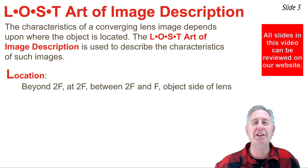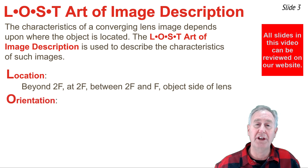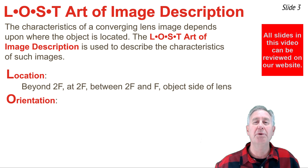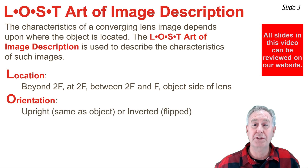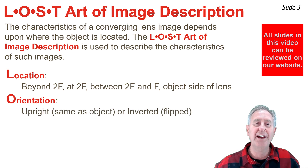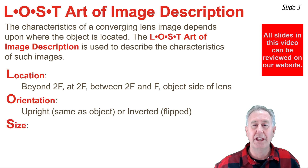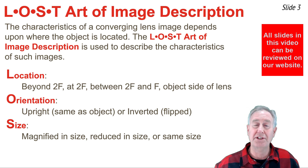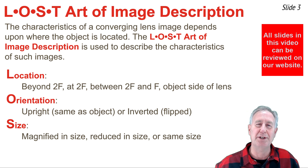The O in LOST refers to the orientation of an image. Sometimes you observe that an image is flipped upside down — we refer to that as inverted — and other times it's not flipped upside down and we refer to that as upright. The S of LOST refers to the size of the image. Images can be magnified in size, the same size as the object, or reduced in size.